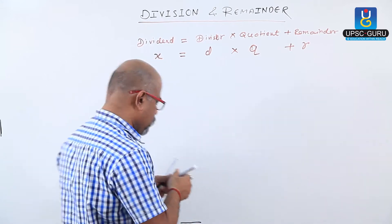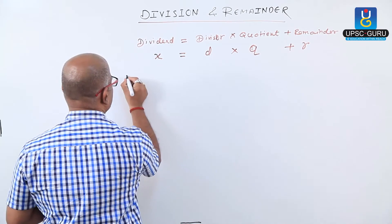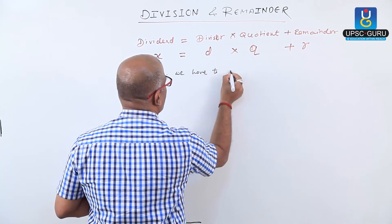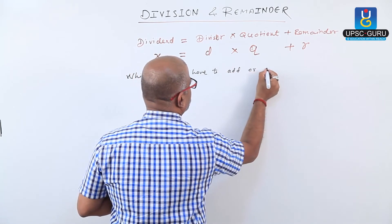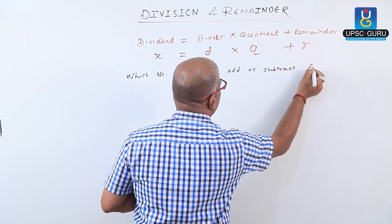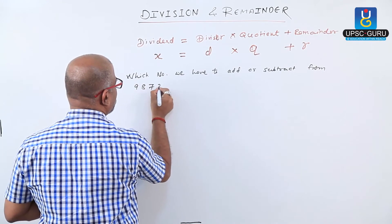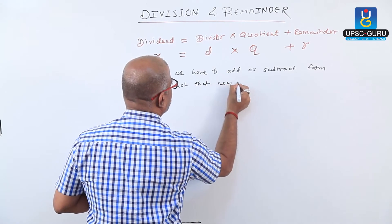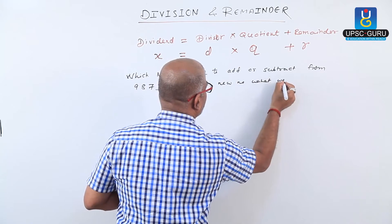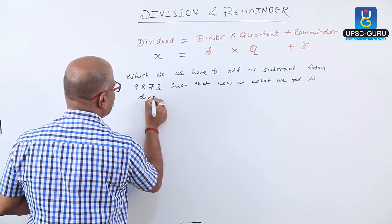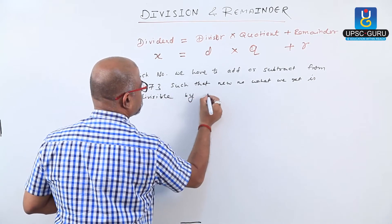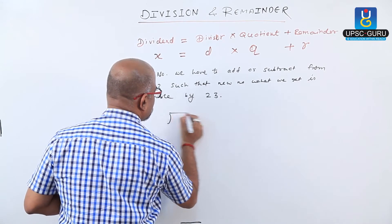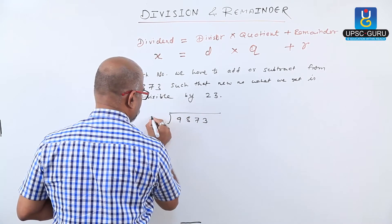Let us check one example. Which number do we have to add or subtract from 9873 such that the new number we get is divisible by 23? Now let us divide 9873 by 23.